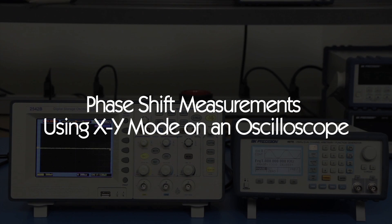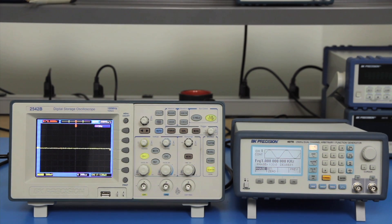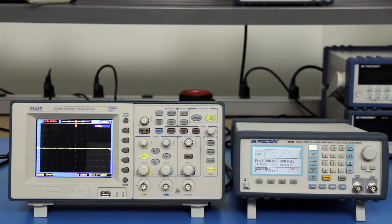In this video, I'm going to show you how to make quick and simple phase shift measurements based on the Lissajous patterns on an oscilloscope using XY mode, which is a function available on many analog and digital storage oscilloscopes.